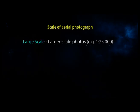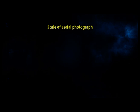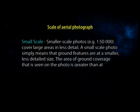Two terms normally mentioned when discussing scale are large scale and small scale. Large scale (e.g., 1:25,000) covers small areas in greater detail — ground features appear larger and more detailed, with less area of ground coverage. Small scale (e.g., 1:50,000) covers large areas in less detail — ground features appear smaller and less detailed, but a greater area of ground coverage is seen on the photo.